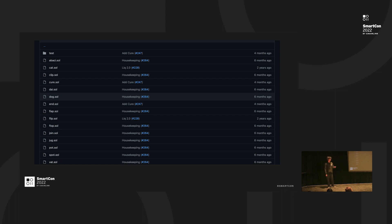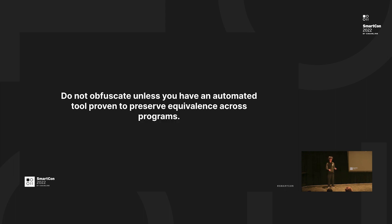So it's usually not advisable to obfuscate the code, unless you have some tool that can obfuscate automatically while preserving the equivalence across the programs. And even if you want to obfuscate, do it after the audit process, because the auditor has to understand what your intention is for writing the code.